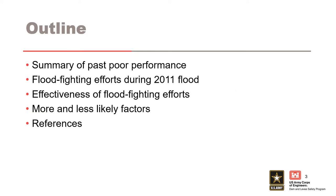The first portion of the presentation will summarize past performance issues observed at Buckshute, followed by a summary of the backward erosion piping factors discussed during the previous case history presentation. A summary of the specific flood fighting efforts performed at Buckshute during the 2011 event will follow, along with an evaluation of their effectiveness. Finally, the more and less likely factors for backward erosion piping will be examined once more, this time with intervention included, to see how the balance of factors are affected.